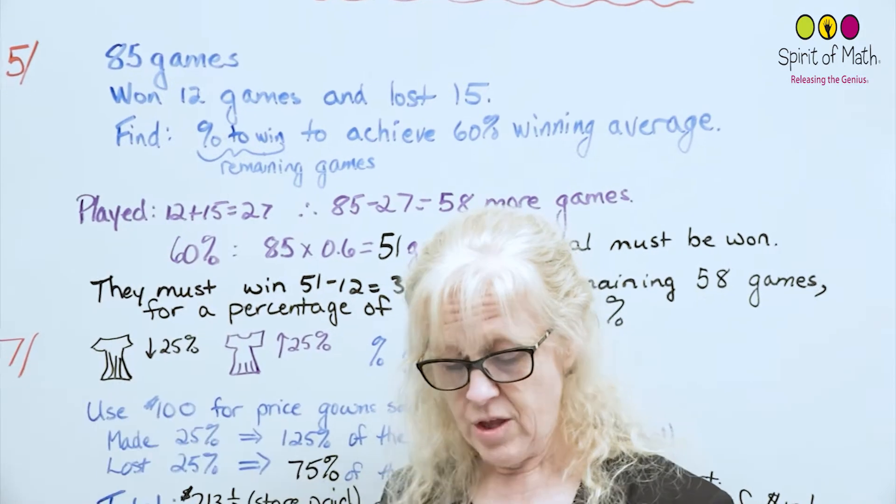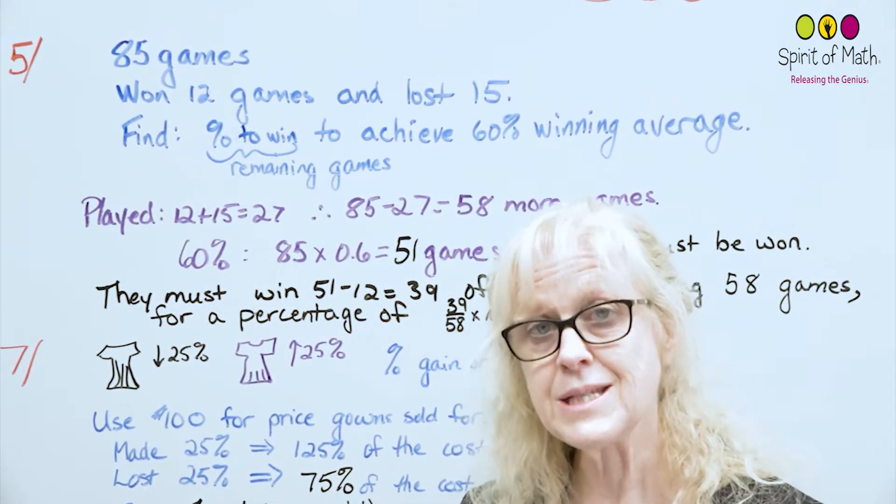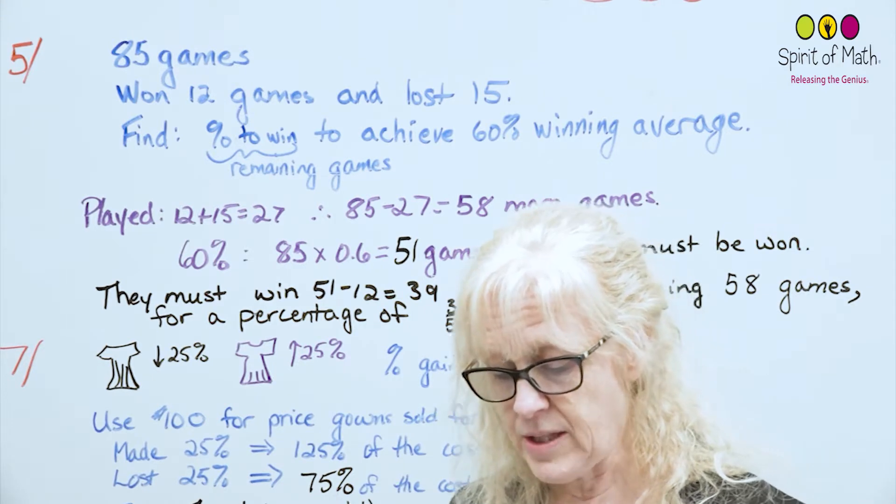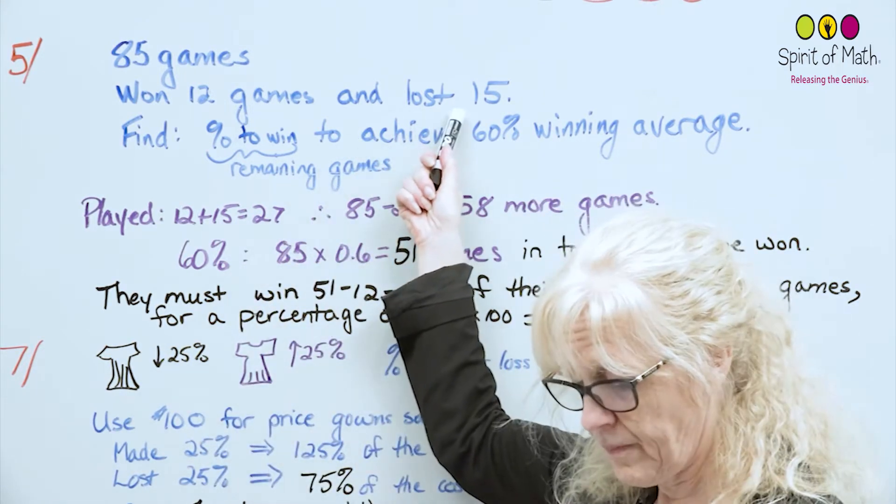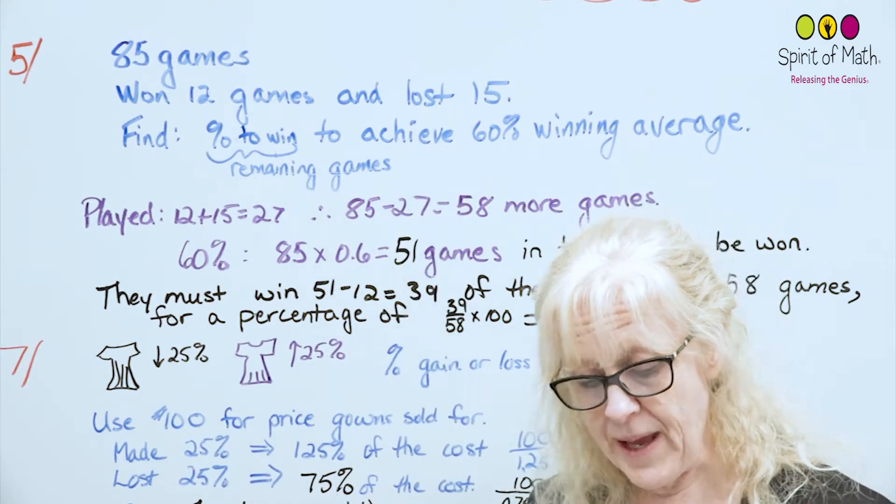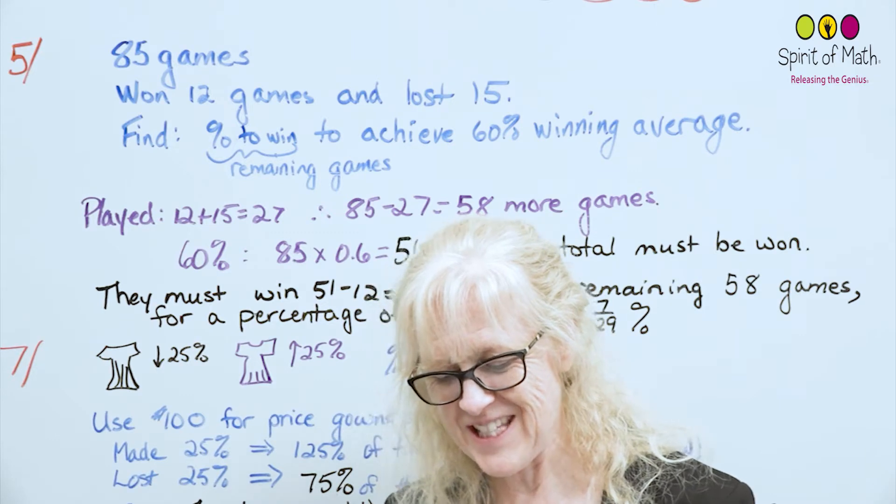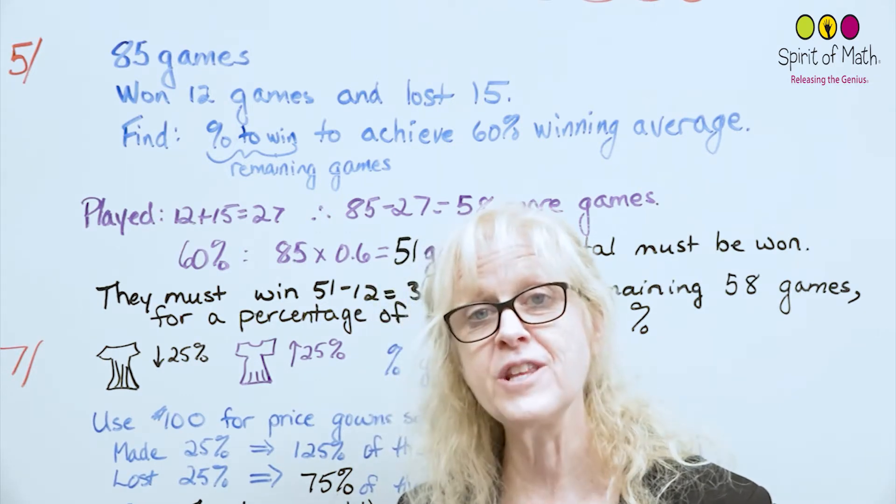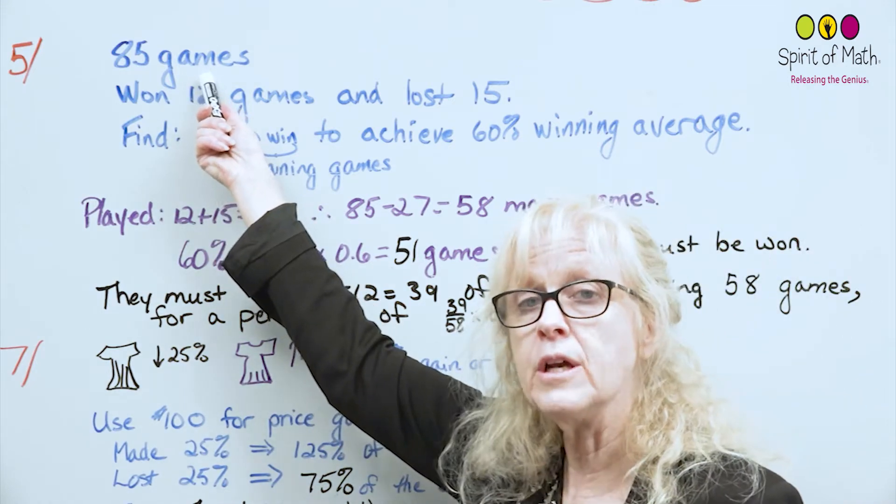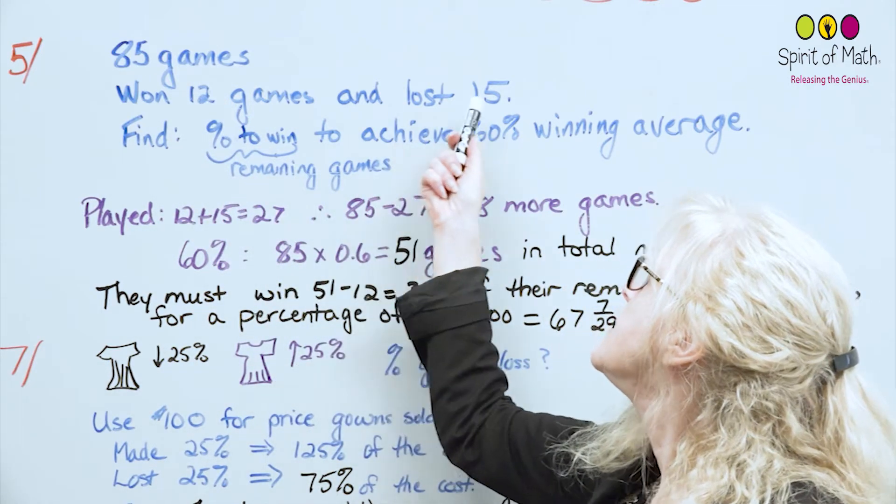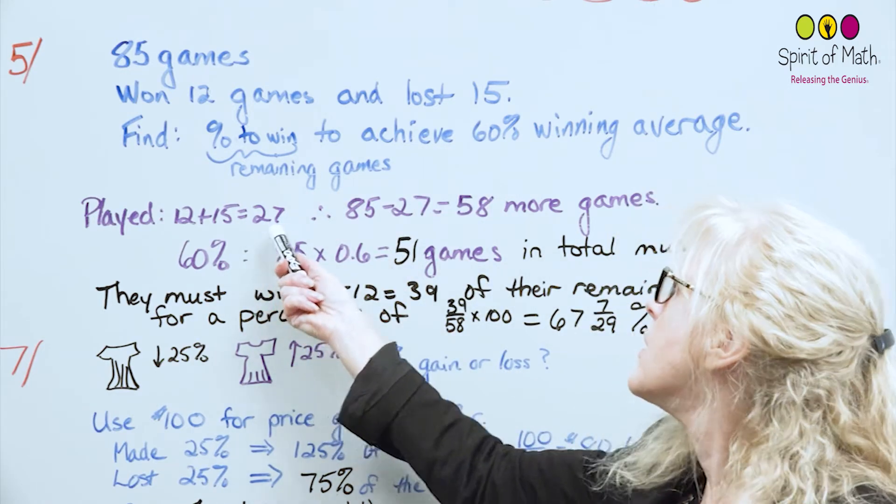Let's start with number five. The question says a hockey team plays 85 games in a season. The team has won 12 games and lost 15 so far. What percentage of the remaining games must it win to achieve a 60% winning average for the year? There's a total of 85 games for the whole year. They've already played 15 plus 12, which is 27 games.